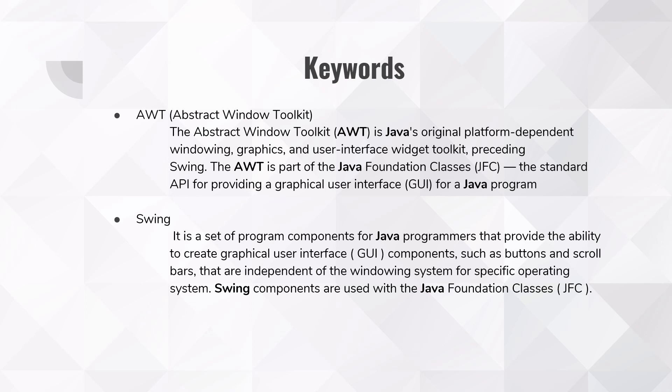AWT is platform dependent, meaning the look and feel varies from one platform to another depending on the platform specifications. The next keyword is Swing. It is a set of program components for Java programmers that provide the ability to create graphical user interface components, such as buttons and scroll bars, that are independent of the windowing system for the specific operating system. Swing components are used with Java Foundation Classes. Swing is like an enhanced AWT — we can create more creative graphical user interfaces, and importantly, it is independent of the platform it is running on.